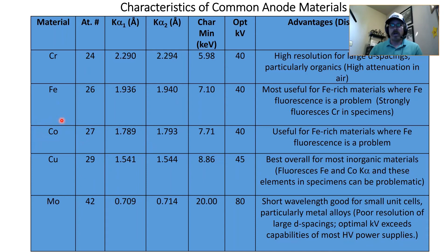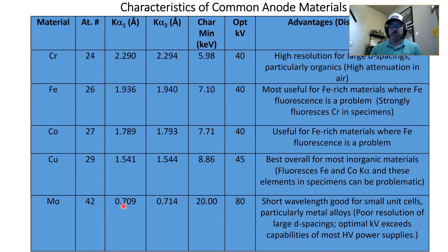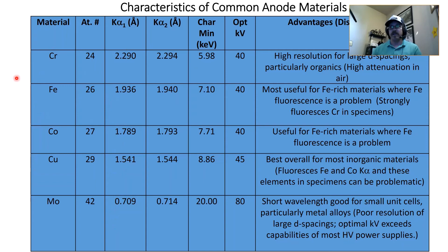Copper is the workhorse target, but it fluoresces iron and cobalt, so it's not ideal for those materials — though we use it anyway at UTEP. Molybdenum has a short wavelength of 0.7 angstroms — roughly half of copper's — making it good for small unit cells. The smaller the wavelength, the smaller the D-spacing you can resolve. Different target materials offer different pros, cons, and wavelengths for the diffractometer.